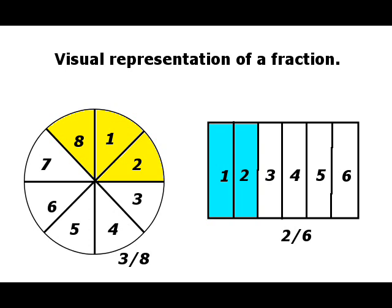Next, we saw that we could divide a circle or a rectangle into an arbitrary number of equal parts. For example, we can see here a circle divided into 8 parts, 3 of which are colored. Therefore, the circle represents the fraction 3 by 8. Similarly, 2 parts of the 6 in the rectangle are colored blue. Therefore, the rectangle represents the fraction 2 by 6.